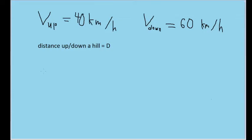In this problem, we are told that a car is moving up a hill at 40 kilometers per hour, and then it moves back down the hill at 60 kilometers per hour. We are asked to find the average speed for the round trip.